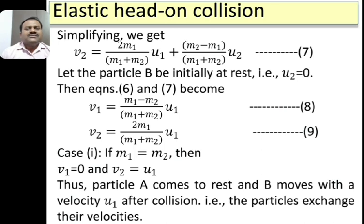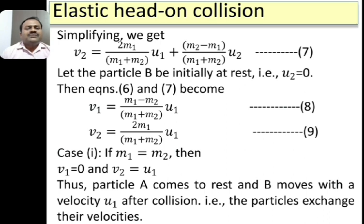Equations 6 and 7 give us the final velocities of particles A and B. Now suppose we assume particle B to be initially at rest, so U2 = 0. Substituting U2 = 0 in equations 6 and 7, we get V1 = [(M1 − M2)/(M1 + M2)]·U1 as equation 8, and V2 = [2M1/(M1 + M2)]·U1 as equation 9. Equations 8 and 9 give the final velocities of the particles A and B.